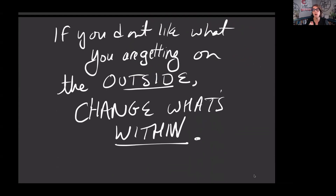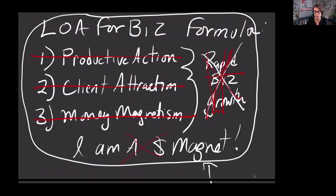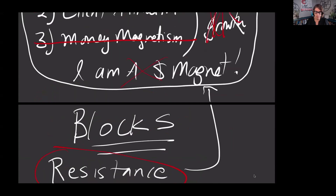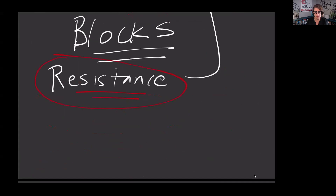Every entrepreneur I know who is struggling comes to me and says, 'I'm so tired of doing the same things over and over and I don't know why it's not working,' or 'I've tried everything and it's not working.' But the thing they haven't tried is what I'm talking about today — they have not learned the law of attraction for business formulas. If this is you, it's going to look like overworking, and in the client attraction piece, it's going to look like being confused about what to offer.